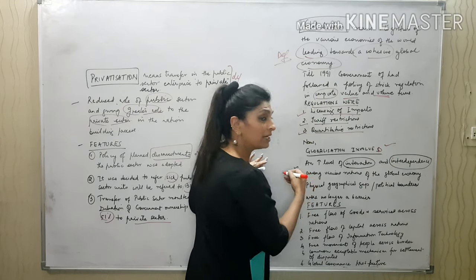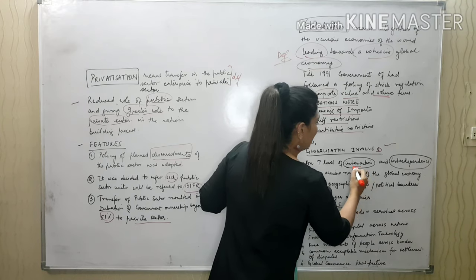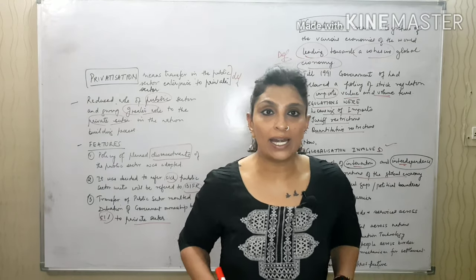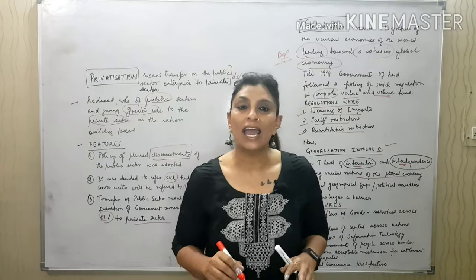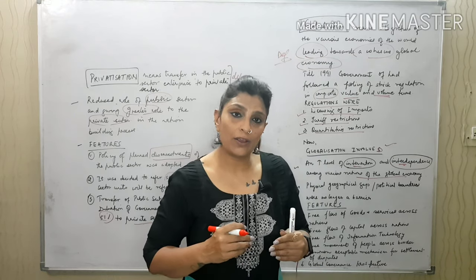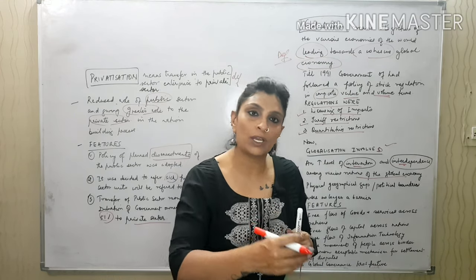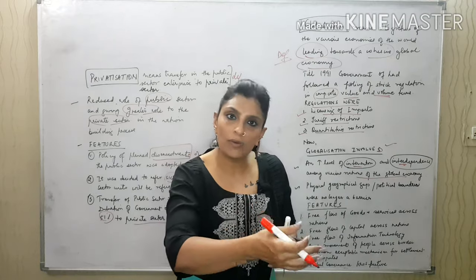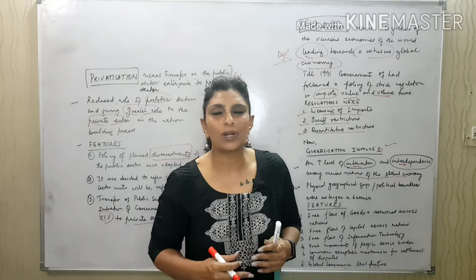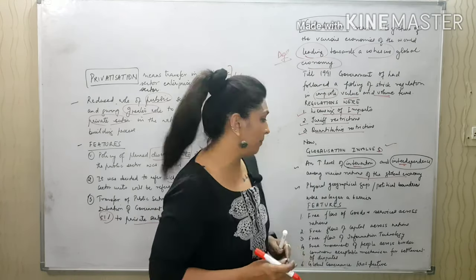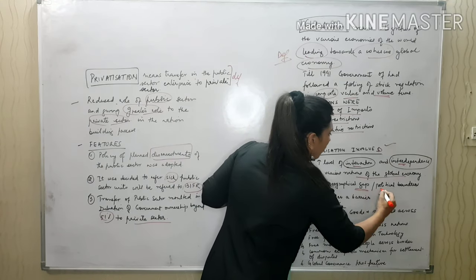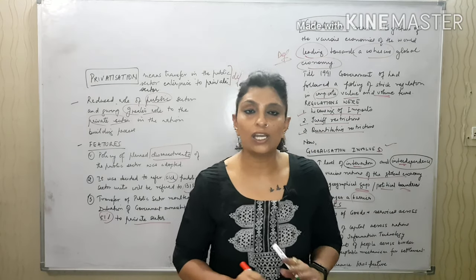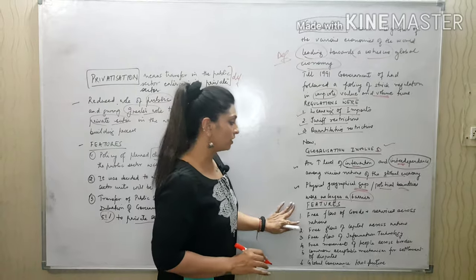Regulations included strict licensing of imports and exports, tariff restrictions — taxes and levies — and quantitative restrictions where you could not import or export beyond a particular quantity. Globalization meant an increase in the level of interaction and interdependence among various nations of the global economy. India was no longer to remain isolated — it had to interact. We wanted to create a good balance of trade and payments. Physical, geographical, and political boundaries were no longer a barrier as these restrictions were removed.